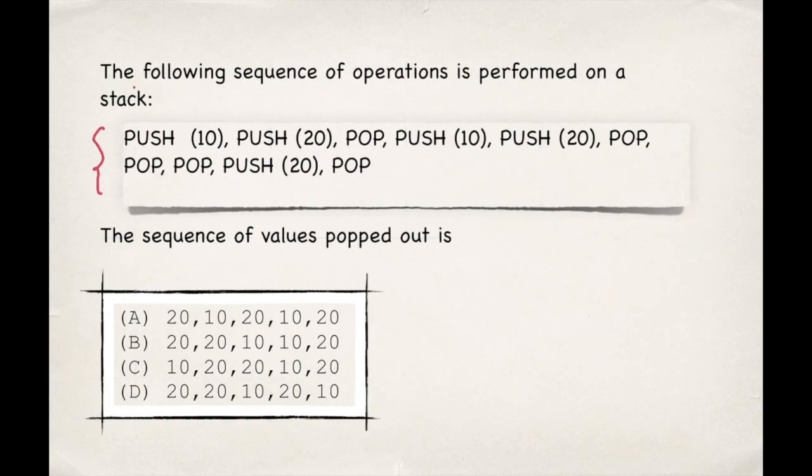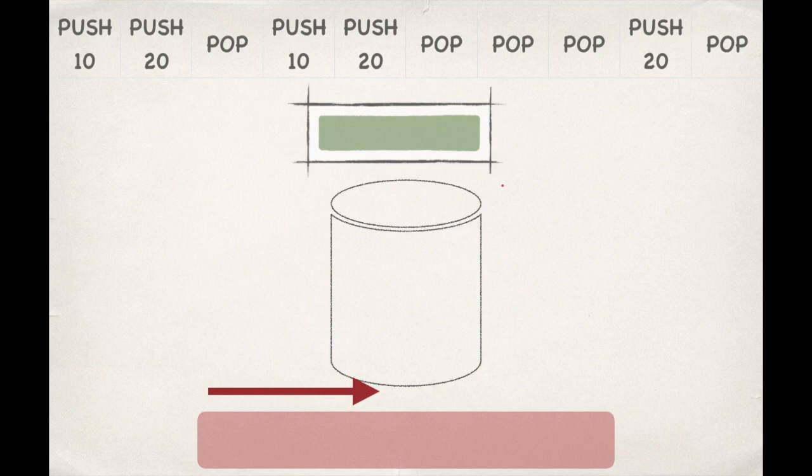These operations are performed on a stack. We need to find the sequence of values popped out. A stack is based on Last In First Out - the element inserted last will be the first one to leave. To maintain that, we use a pointer that points to the top of the stack. Since the stack is empty, this pointer is outside the stack.